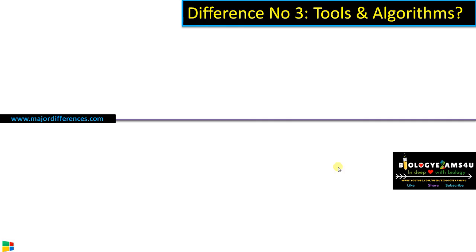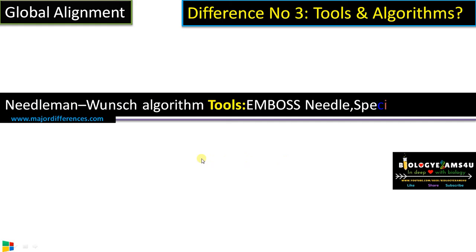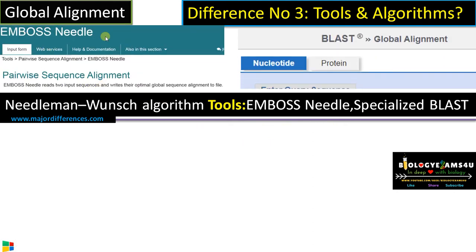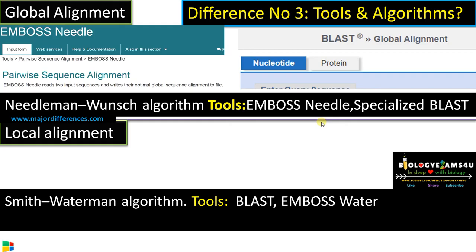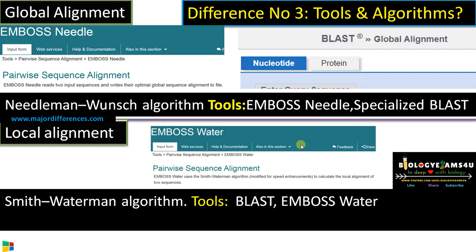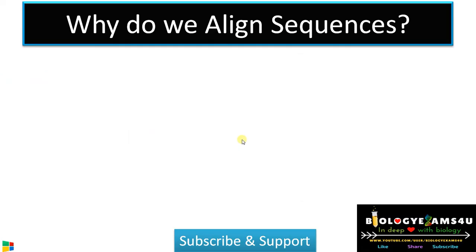Regarding tools and algorithms: for global alignment, the Needleman-Wunsch algorithm is widely used; tools include EMBOSS Needle and specialized BLAST for global alignment. BLAST is generally used for local alignment, but a specialized BLAST now exists for global alignment. For local alignment, the Smith-Waterman algorithm is commonly used; tools include BLAST (Basic Local Alignment Search Tool) and EMBOSS Water from EBI, the European Bioinformatics Institute.